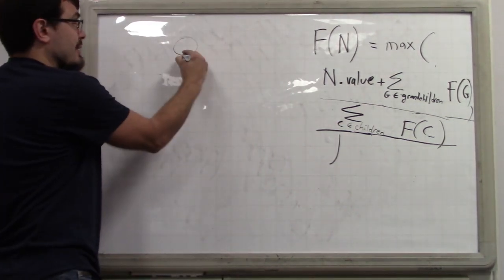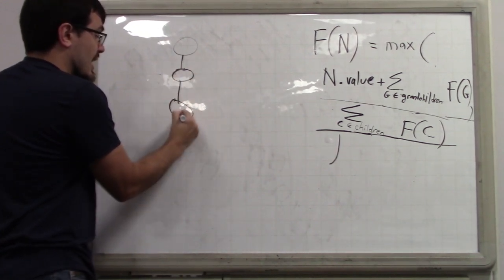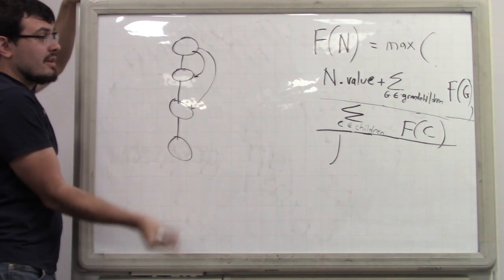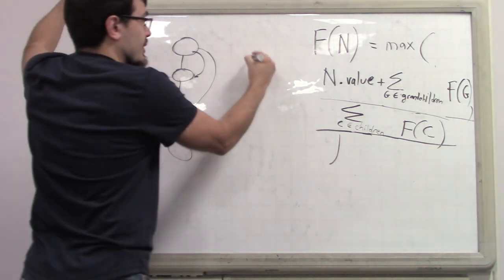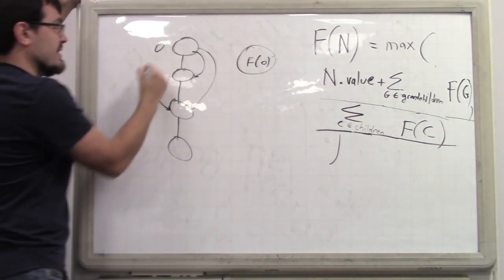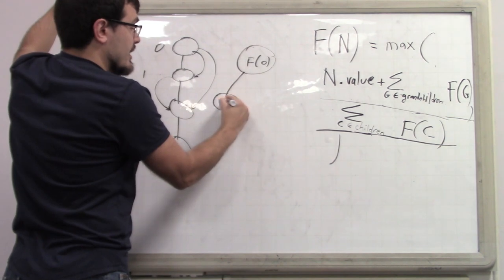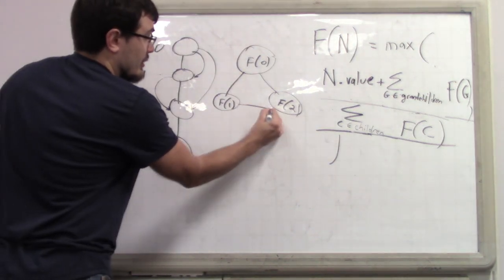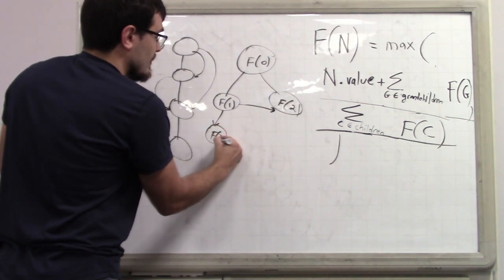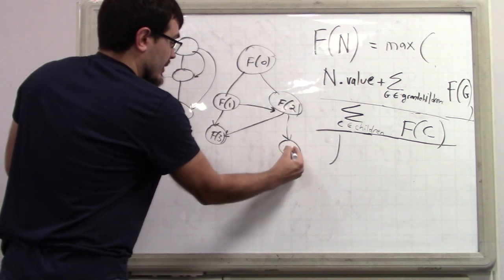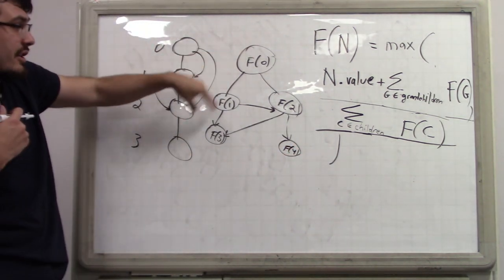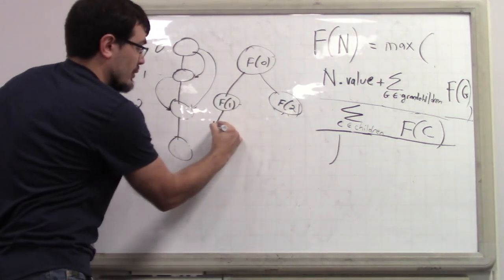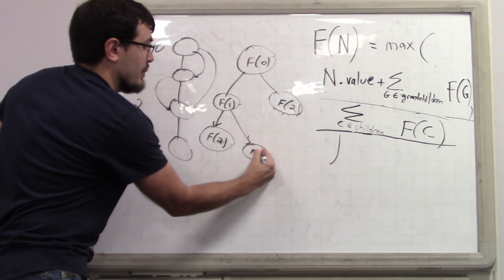It's much easier to see with the linear robber problem. You just have a linear chain of houses. When you open a function call for one node, it calls its neighbor and the one two away. That one, in turn, calls the next two. So f(0) calls f(1) and f(2); f(1) calls f(2) and f(3); f(2) calls f(3) and f(4). This is a bit like Fibonacci.